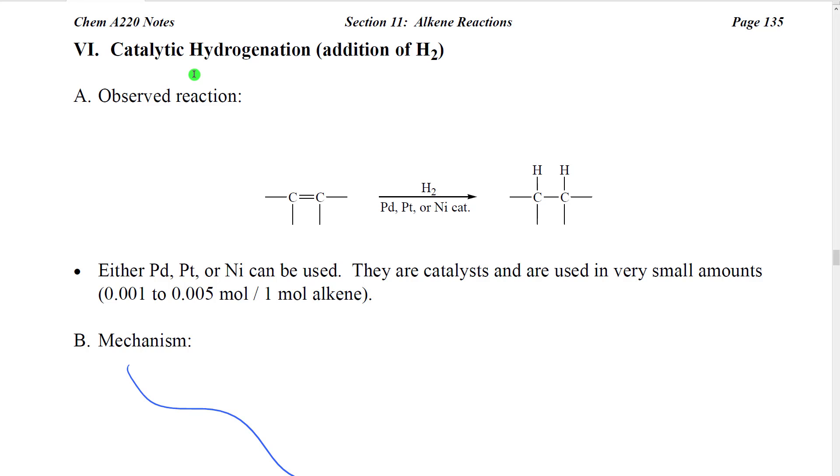The first one we're going to look at is catalytic hydrogenation in which we're going to be adding H2. In our observed reaction we start with an alkene, we use hydrogen gas and then we use a metal catalyst and we use the actual solid metal. So this is often called heterogeneous hydrogenation because we will have a liquid solution mixed with a metal catalyst and so we will have two phases.